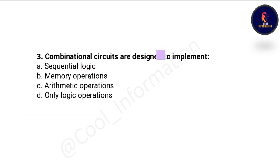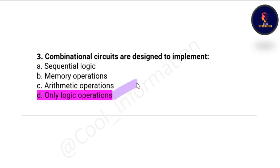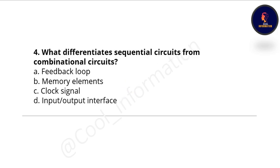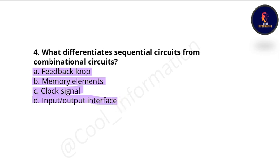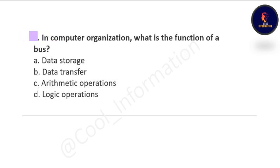Question 3: Combinational circuits are designed to implement — Option A: sequential logic, Option B: memory operations, Option C: arithmetic operations, Option D: only logic operations. The correct option is only logic operations. Question 4: What differentiates sequential circuits from combinational circuits? Option A: feedback loop, Option B: memory elements, Option C: clock signal, Option D: input-output interface. The correct option is memory elements.